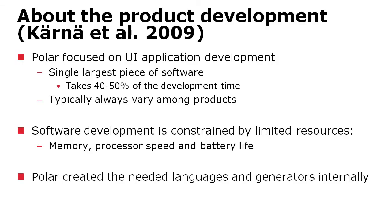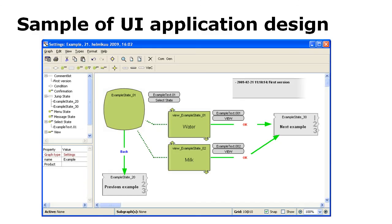Polar created these languages and generators internally. They describe, for example, user interactions, menus, menu states, and things like that — as you can see here.